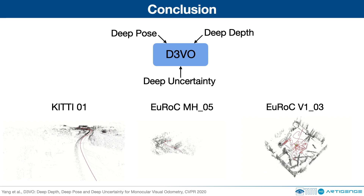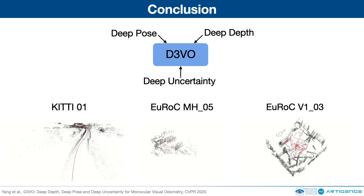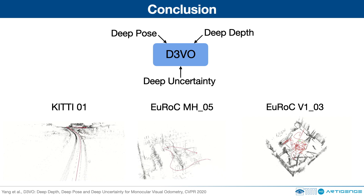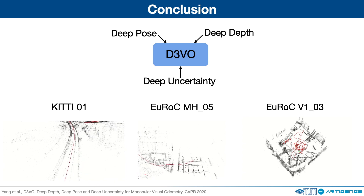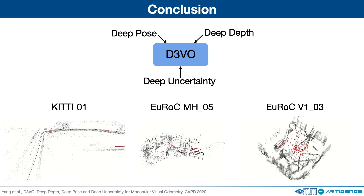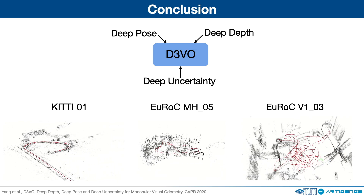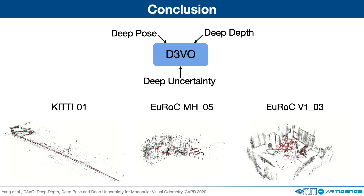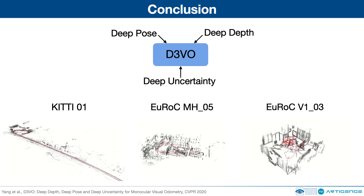To summarize, we present D3VO, a monocular visual odometry method which combines deep predictions of depth, pose, and uncertainty in a direct sparse odometry method. The evaluation results showed that D3VO achieves the precision of state-of-the-art stereo, LiDAR, and visual inertial odometry while using only a single camera. D3VO. Thanks for watching!